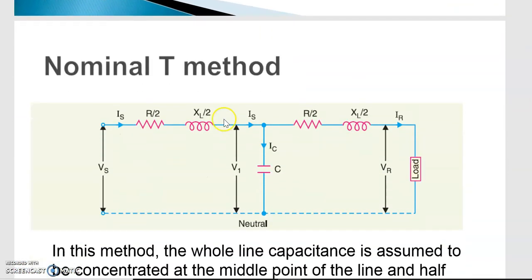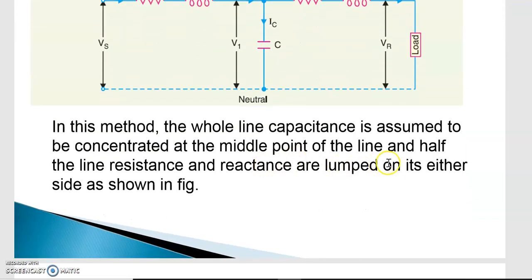In the nominal T method, the resistance and inductance are distributed — R/2 and R/2, and XL/2 and XL/2 — and the capacitance is considered at the center of the line as a lumped capacitor. Unlike the end condenser method where the voltage across the capacitance equaled Vr, here Vr ≠ V1. The shape of this model looks like a T, which is why it is called the nominal T method. The whole line capacitance is assumed concentrated at the middle point, and half the line resistance and reactance are lumped on either side.